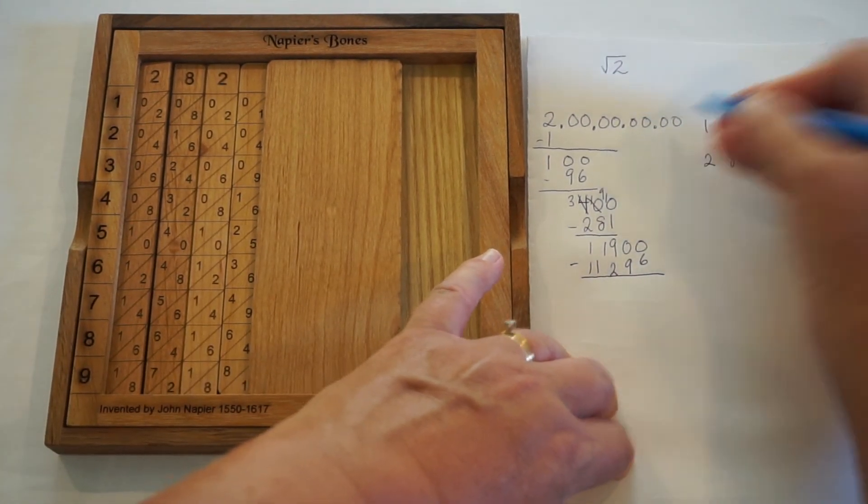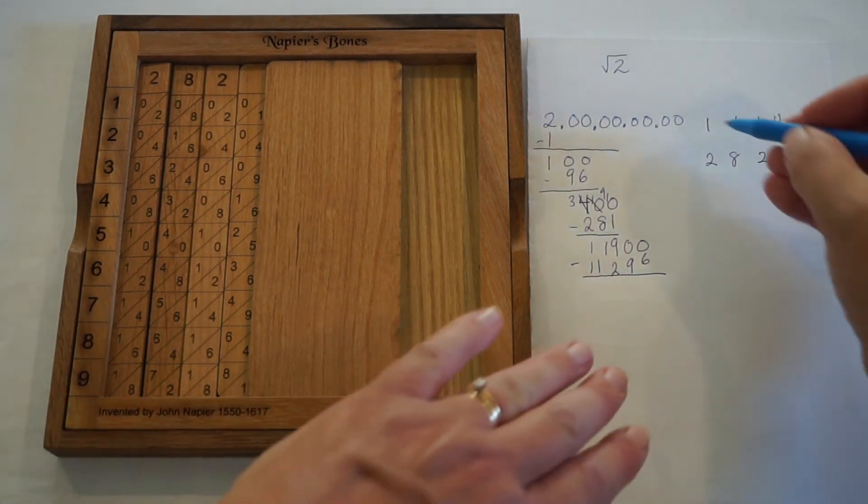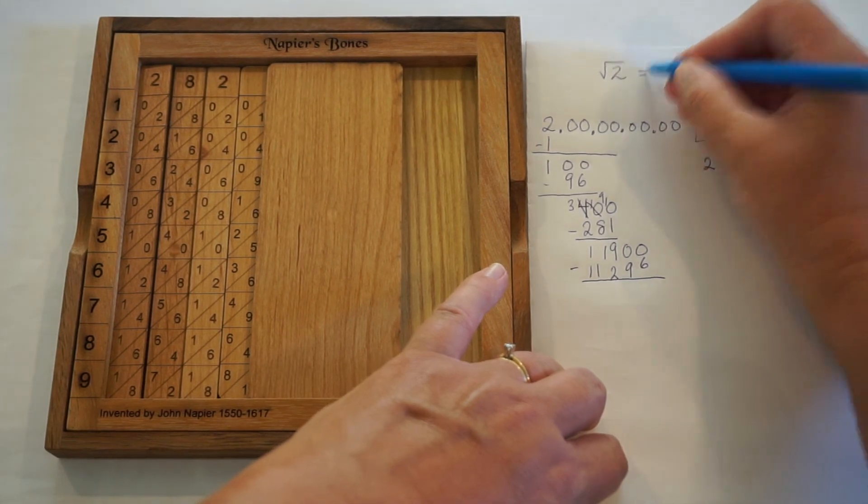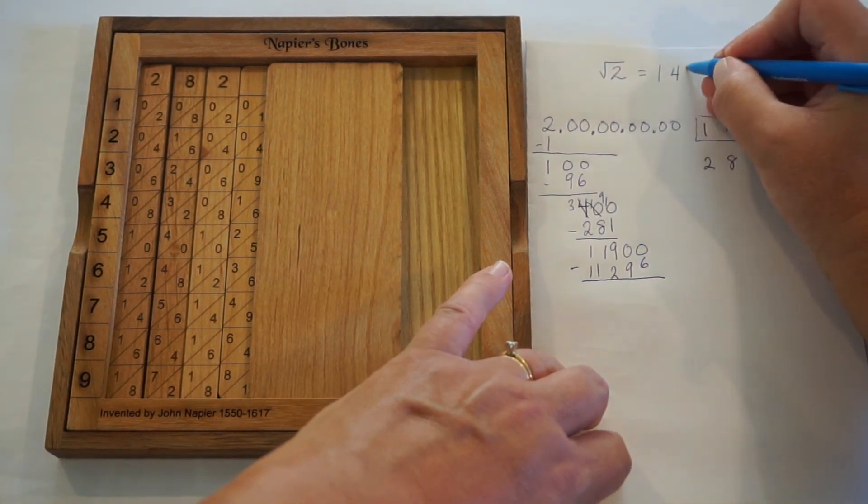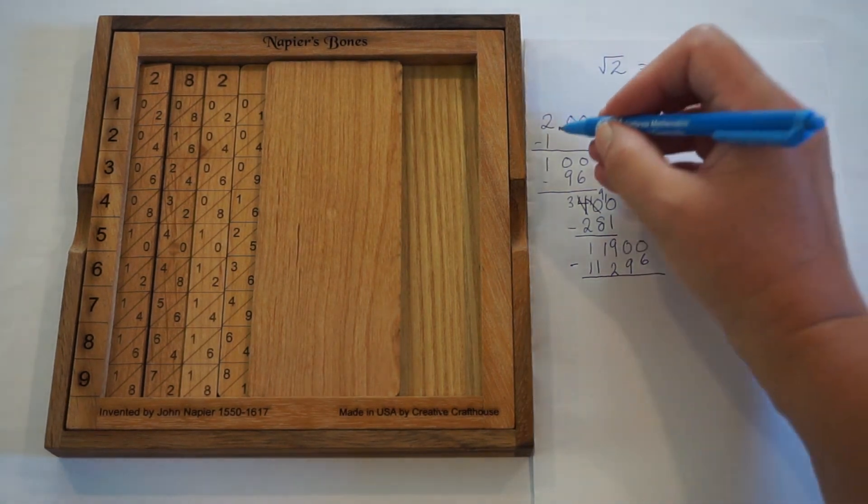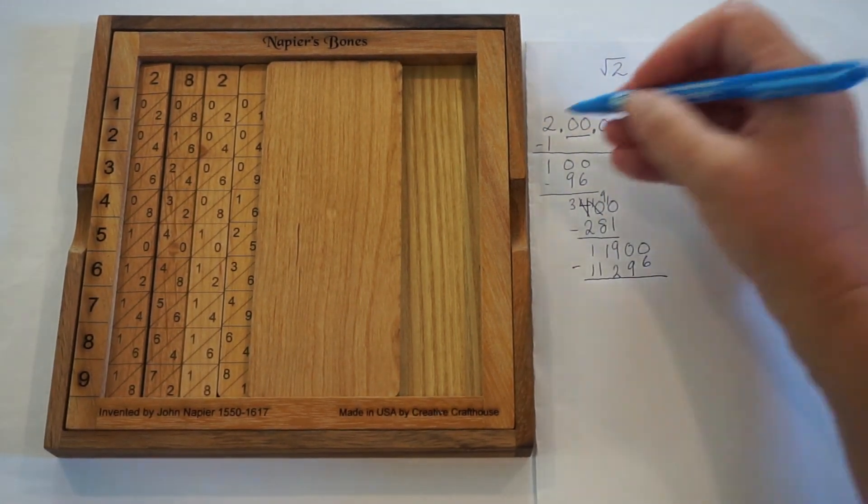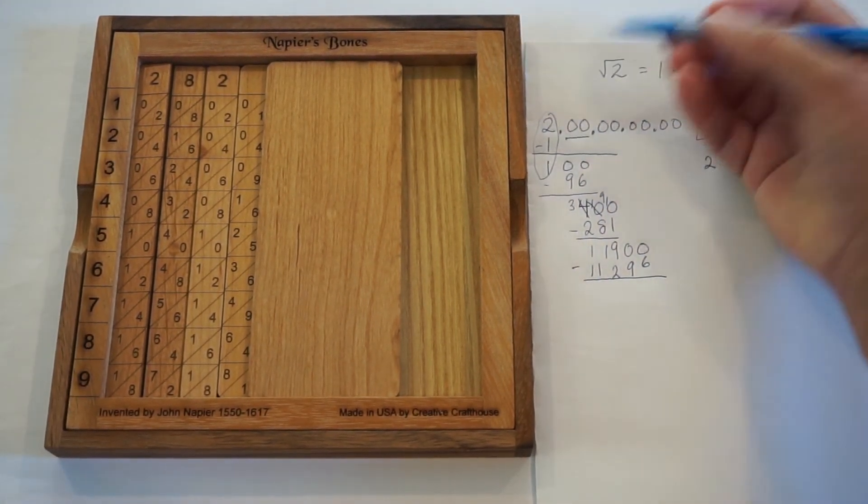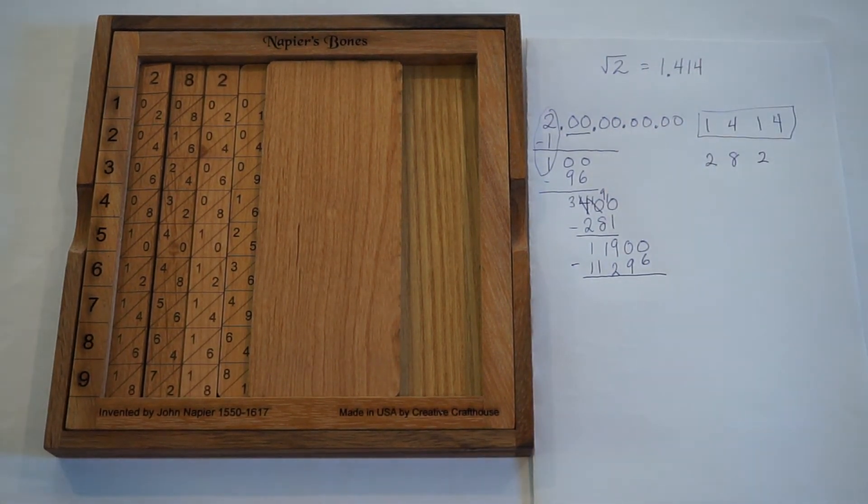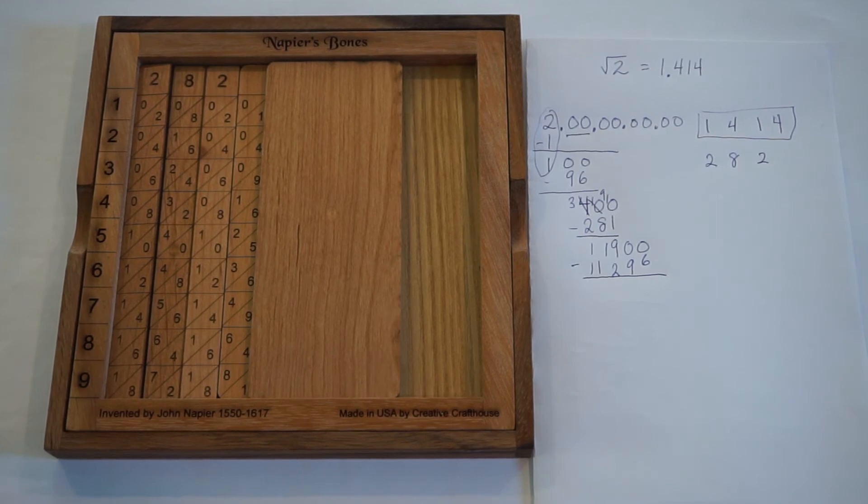And if we wanted to continue, we would subtract, we would place another two zeros, and we would just continue the process. So the answer as we have it this far is, well, I've got a 1414. The question is, where do I put the decimal? And since I started adding these zeros right after our first step, the decimal is going to go right after that first digit. So the square root of 2 is approximately 1.414.